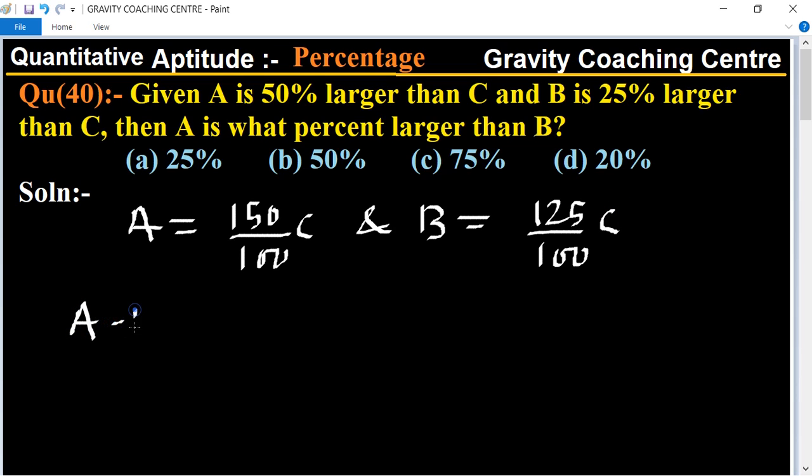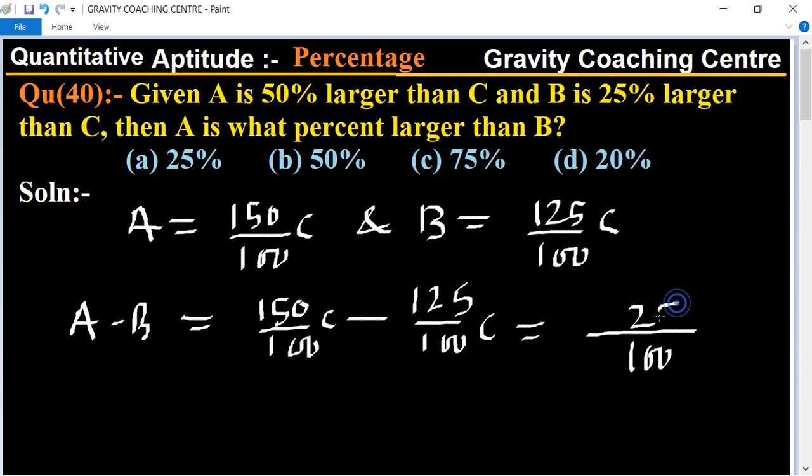between A and B: A minus B equals 150 upon 100 C minus 125 upon 100 C. After taking LCM, this equals 25 upon 100 C. Therefore, the required percent equals...